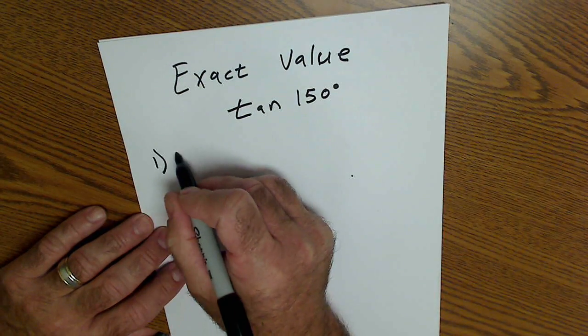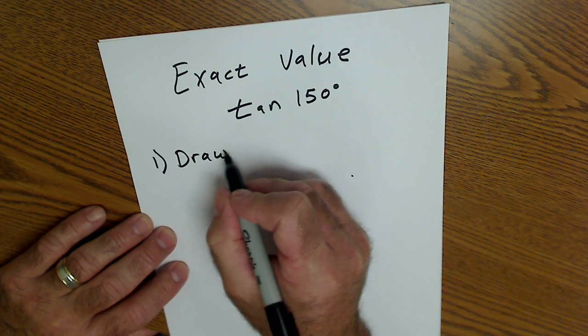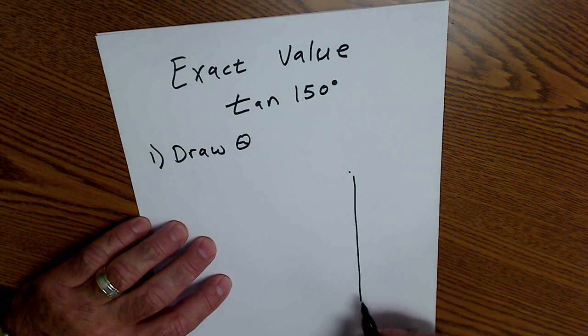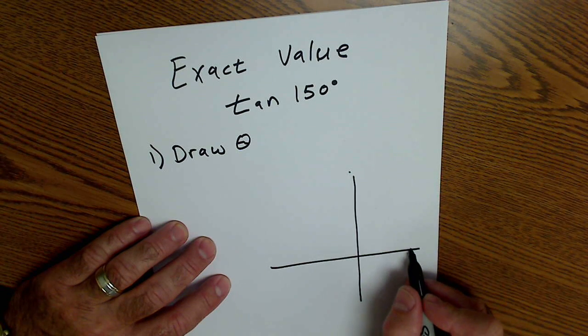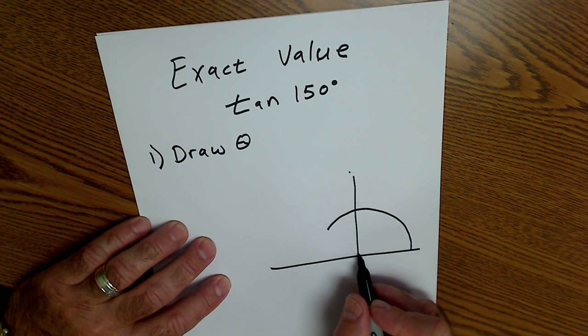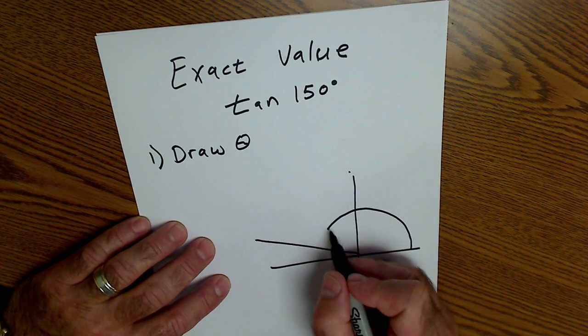Step one, draw the angle. Theta is the angle, so draw theta. So I start right here, I rotate 150 degrees and end right there.